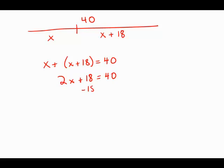I'll subtract 18 from both sides. 2x equals 22. Now I will divide both sides by 2 and I get x equals 11. And this is answer choice B.